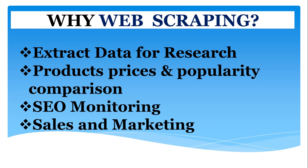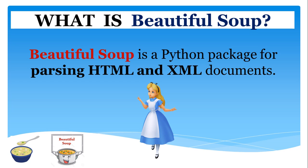So instead of extracting data manually, you can use the Beautiful Soup library to scrape or extract data in an automated manner using a script. So that brings us to the question: what is Beautiful Soup? Beautiful Soup is a Python package for parsing HTML and XML documents. You might wonder why it has such a name — it is actually named after a poem from Alice's Adventures in Wonderland written by Lewis Carroll, and that poem has the exact name Beautiful Soup.